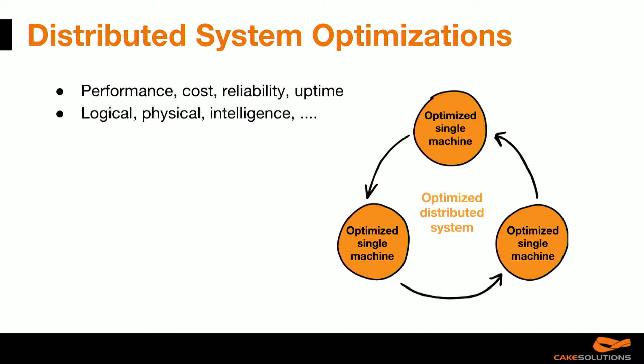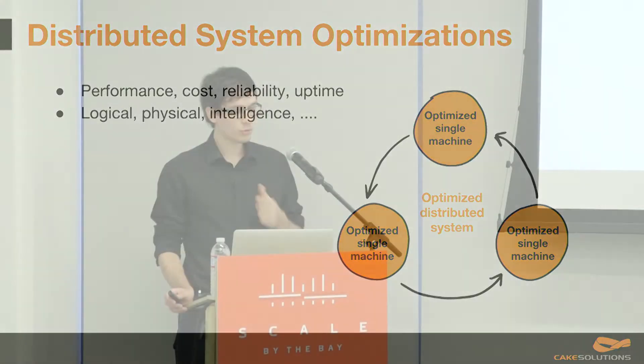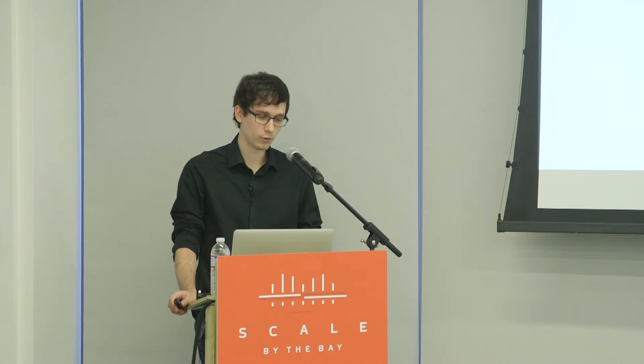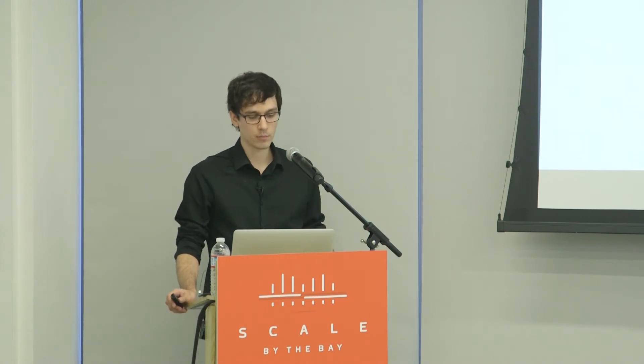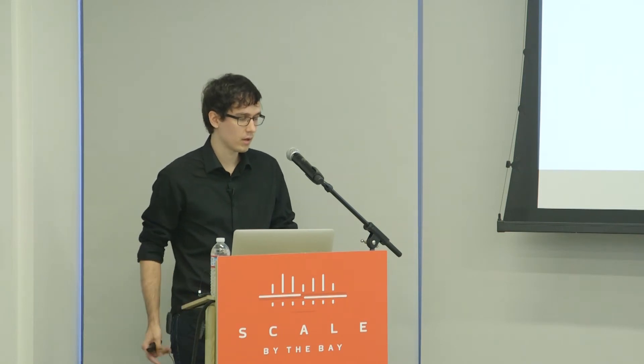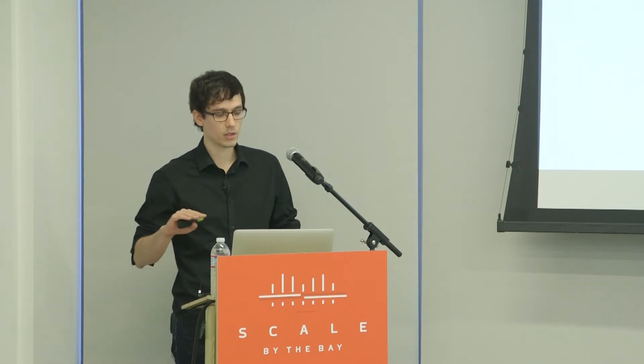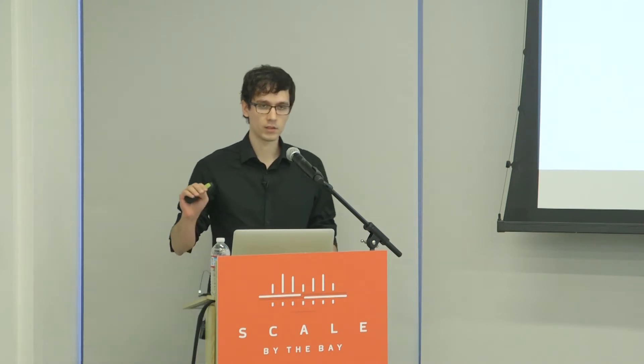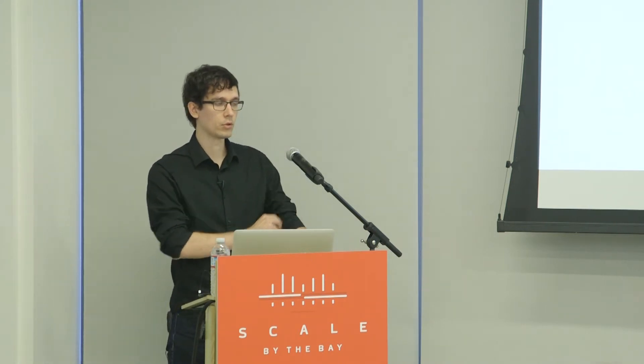But don't worry, I won't talk about any of that throughout the rest of the presentation. I'll talk about optimizations at a higher level — optimizations using intelligence, using machine learning. Most people, when you talk about intelligence, assume we're talking about performance, but we can optimize other things as well: things like reliability, uptime, and cost. And there are different levels — we can optimize at the code level or logical/physical level, but we'll talk about the highest level using intelligence.